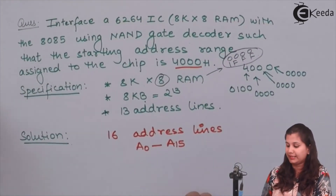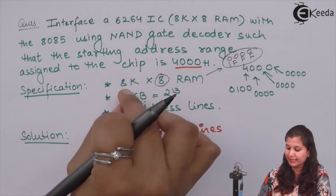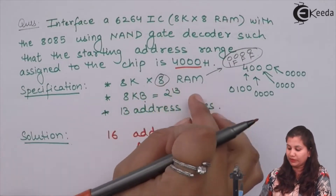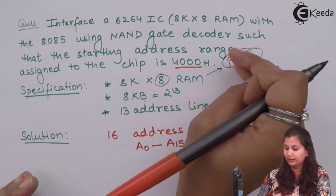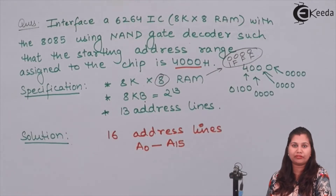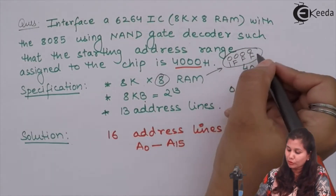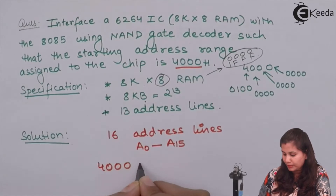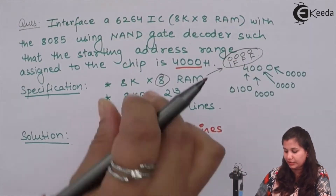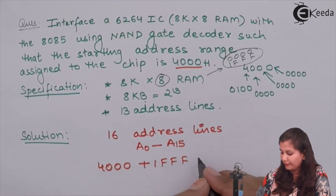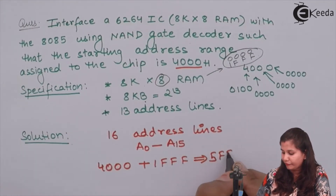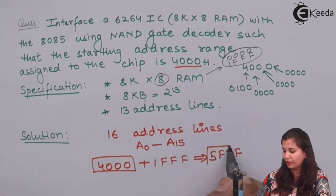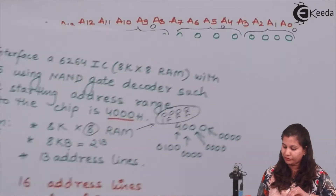Let us understand again: the size of the memory chip is 8 kilobytes. If we start the address locations from 0000H, it will require addresses from 0000H to 1FFFH. Since the starting address must be 4000H, adding 4000H plus 1FFFH gives the end address as 5FFFH. So the starting address is 4000H and the ending address is 5FFFH.